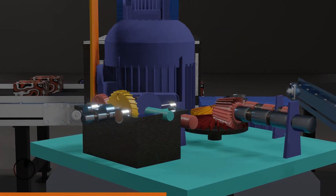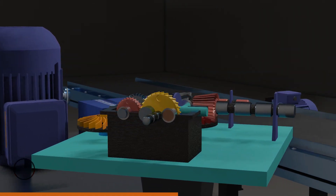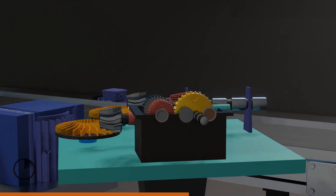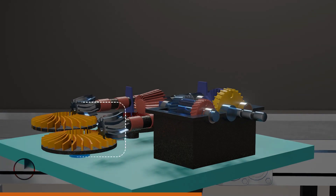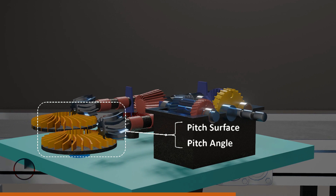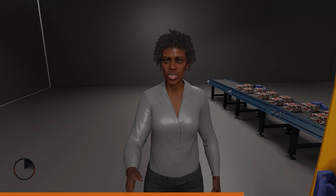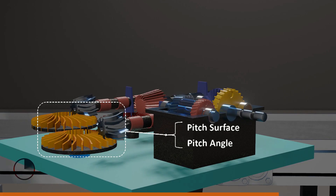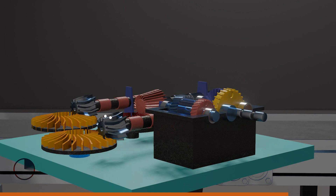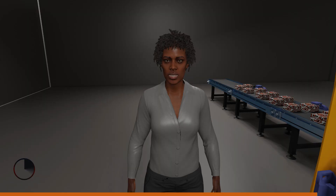Generally, in gear design, there are two important features that come in handy: the pitch surface and the pitch angle. The pitch surface of a gear is the imaginary toothless surface that averages out the peaks and valleys of the individual teeth. The combination of the peaks and the valleys of the teeth forms what we know as the pitch angles.